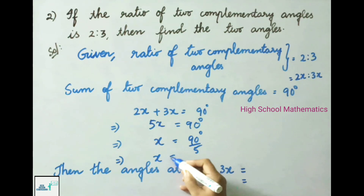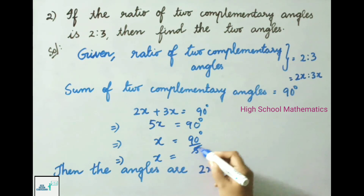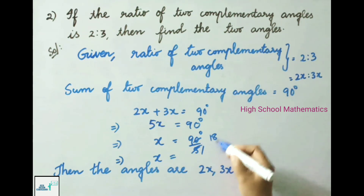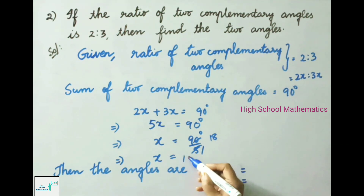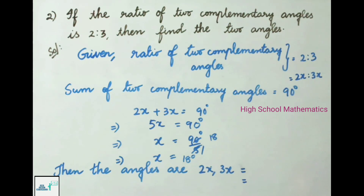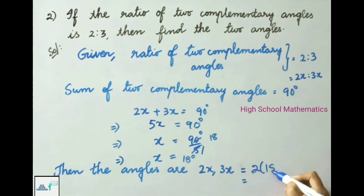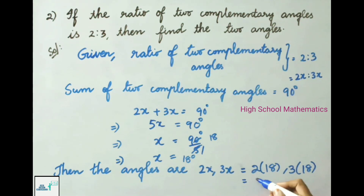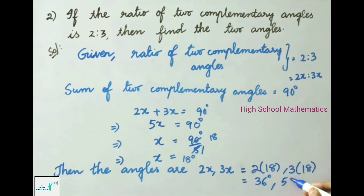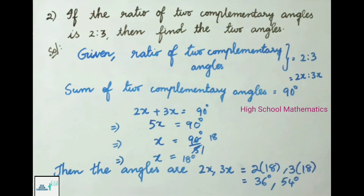X equals 18 degrees. Then the two angles are 2X and 3X, that is 2 times 18 and 3 times 18. 2 times 18 is 36 degrees, and 3 times 18 is 54 degrees. Therefore the two complementary angles are 36 degrees and 54 degrees.